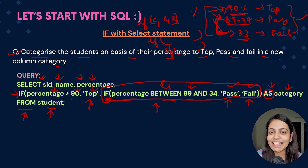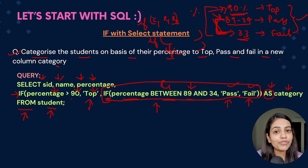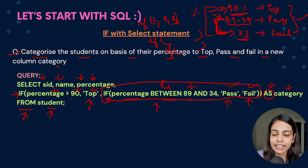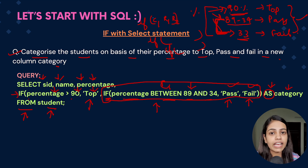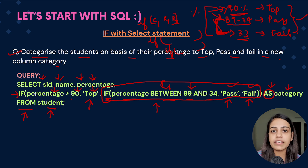You might think CASE is easier to read than nested IF, but IF has lower time complexity, so queries run faster. CASE has slightly higher time complexity, meaning queries take a bit longer to run.